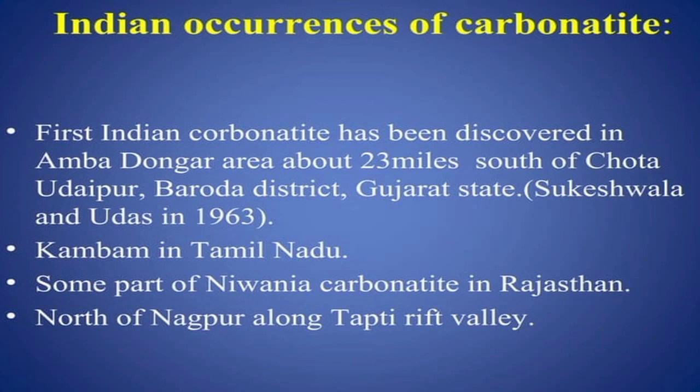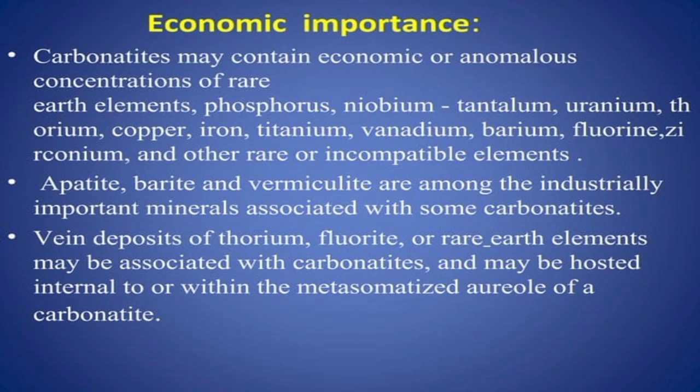Regarding Indian occurrence, the first Indian carbonatite was discovered in the Amba Dongar area, about 23 miles south of Chhota Udaipur in Baroda District, Gujarat. It is also found in Kampam District in Tamil Nadu, in parts of Rajasthan, and north of Nagpur along the Tapti Rift Valley.